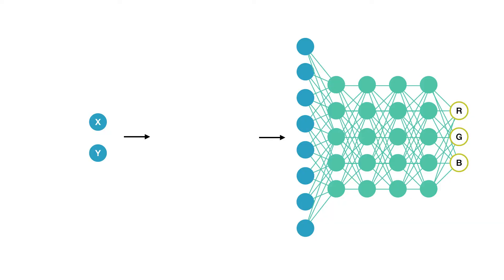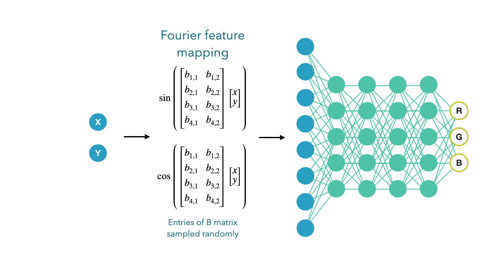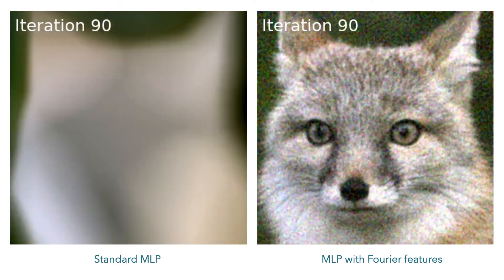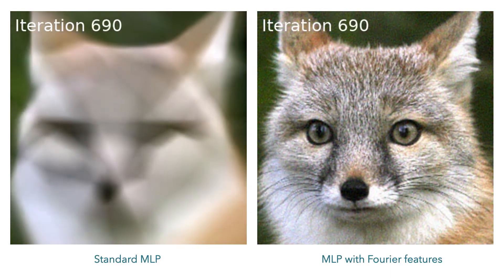We present a simple technique to fix this problem. Instead of just inputting the low-dimensional coordinates directly into the network, we first pass them through a Fourier feature mapping, which looks like a set of randomly scaled and rotated sinusoids. This allows us to control the frequencies that these MLPs can represent in practice. With this technique, the MLP can quickly learn the high-frequency details in this image.